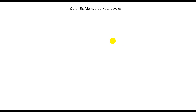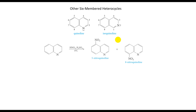Pyridine rings can be fused with benzene rings to produce polycyclic aromatic heterocyclics. The most important examples are quinoline and isoquinoline, analogues of naphthalene but with nitrogen in place of CH at C1 or C2. Electrophilic substitution in these amines occurs in the carbocyclic ring, illustrating the inactivity toward electrophiles of the pyridine ring relative to the benzene ring.